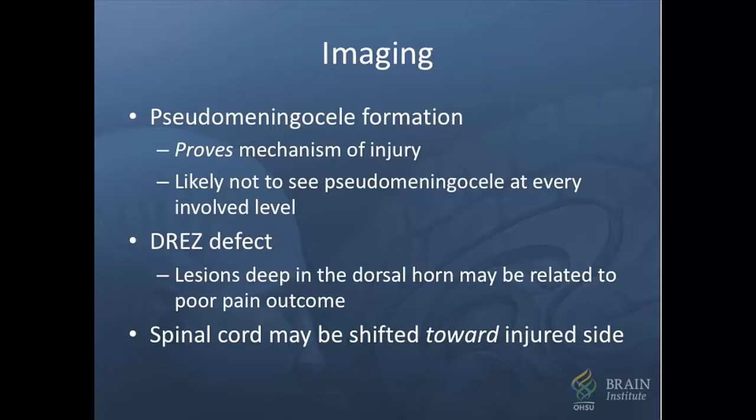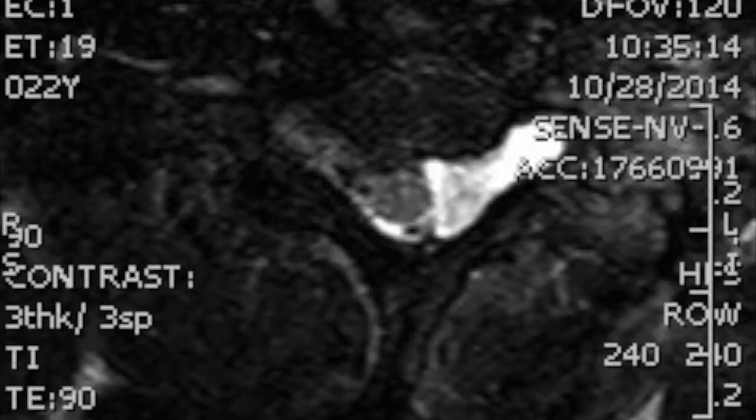On occasion, a defect at the dorsal root entry zone of the spinal cord can also be visualized on axial MRI. Prominent defects at the entry zone related to the avulsion may also negatively influence the pain relief outcome from DRES lesions. The spinal cord may also be shifted either towards or away from the side of the avulsions. On this axial T2 MRI, you can see a large pseudomeningocele in the mid-cervical region, which extends well out into the neural foramen. This probably represents the most characteristic imaging finding with brachial plexus avulsion.